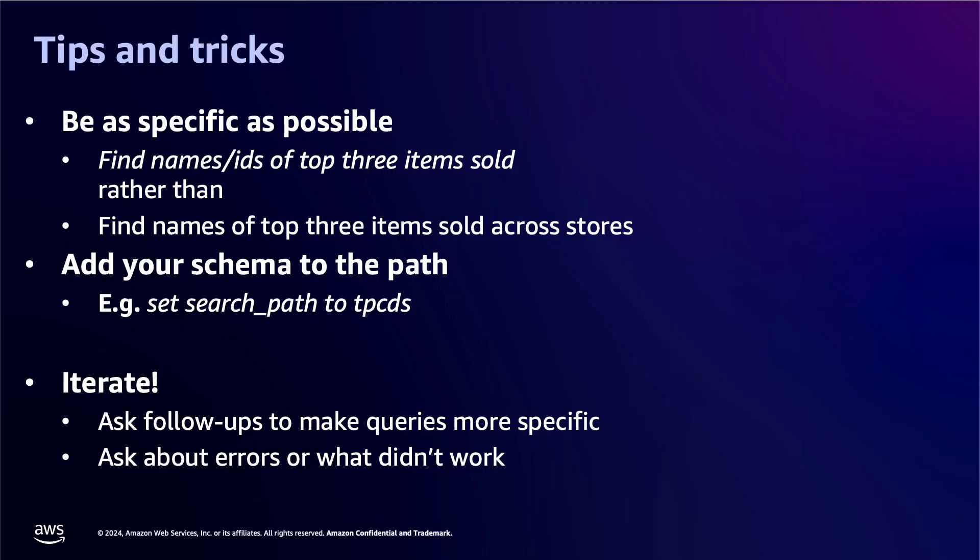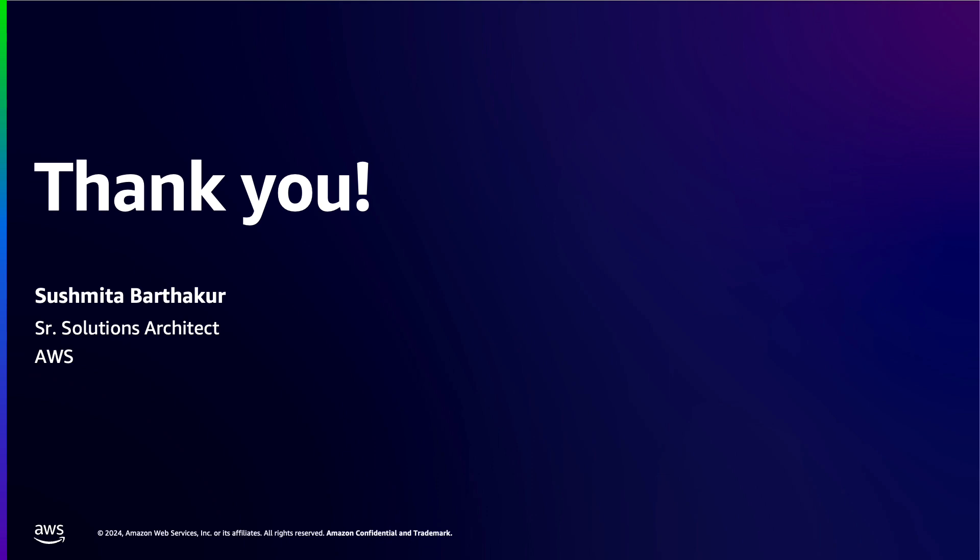Now let's look at a few tips and tricks for using the feature. Be as specific as possible — instead of asking find names and IDs for top three items sold, ask more specifically: find names for the top three items sold across stores. Also, remember to add your schema to the search path, for example: set search path to TPCDS. And lastly, iterate — ask follow-up questions to make queries more specific, and ask about errors and what did not work. With this, we conclude our demo on Amazon Q Generative SQL feature in Amazon Redshift Query Editor in public preview. Happy exploring this new and powerful feature, and thank you so much for watching.